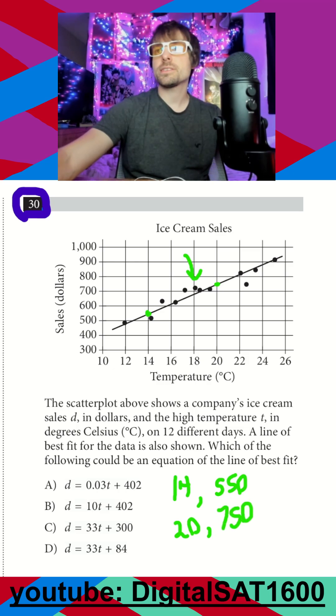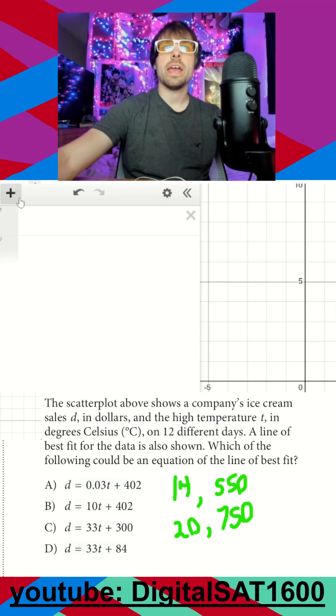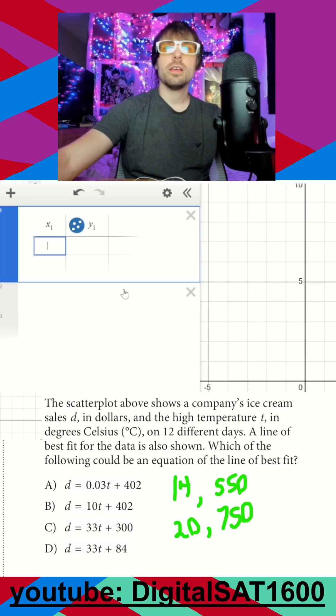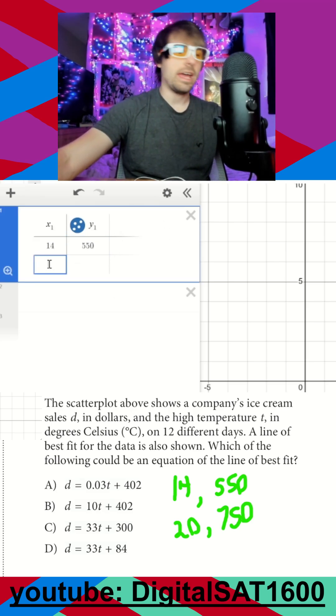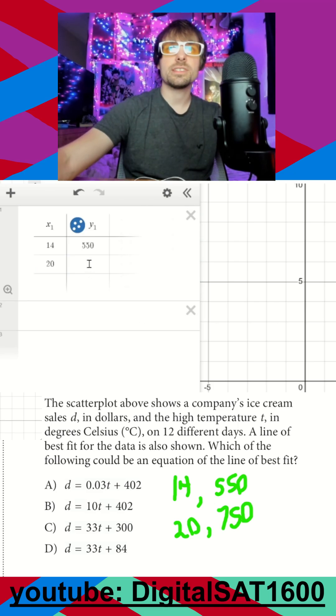And remember with two points we open up our Desmos and I add this little table button here and I go 14, 550 and 20 and I think it was 750.